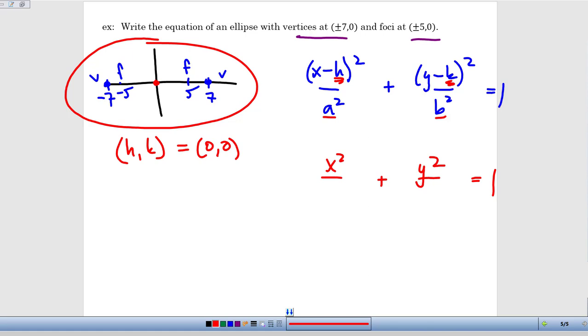We also know what a is, because remember a is that distance from the center to the vertices. So that's 7, we're extending 7 to the left and 7 to the right. So if a equals 7, then that means a squared is going to be 49.